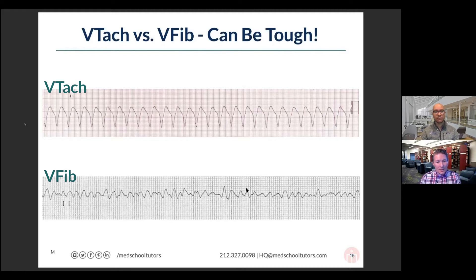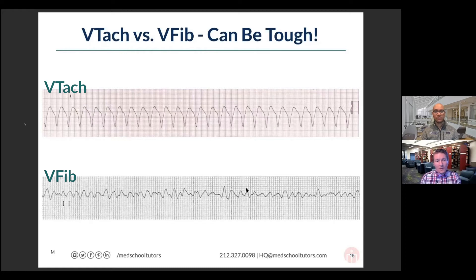A student asked whether VTac always looks the same. The answer is kind of — you can tell there's a difference between the appearance on the previous slide and this one slightly, but the overall gist of a monomorphic, wide, complex, big, sharp appearance to the QRS complexes that's usually very fast is going to be what we typically see. There is usually a fairly clear appearance of VTac that almost always looks something like that top image.